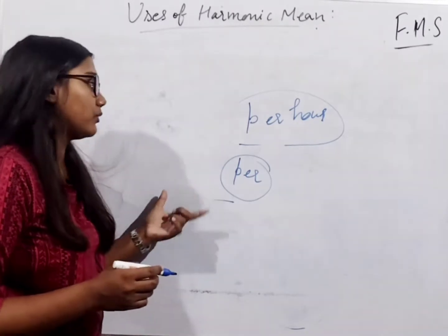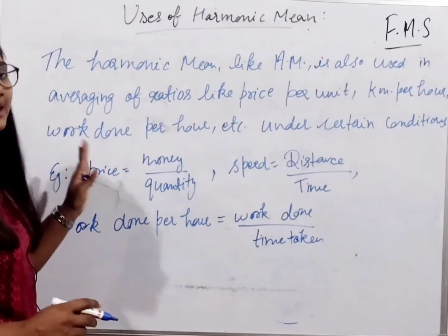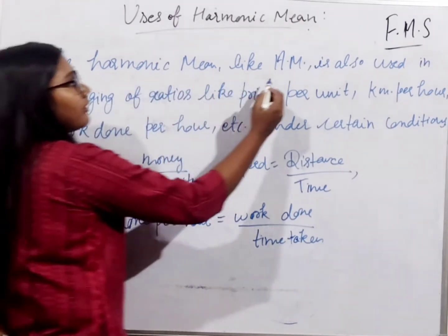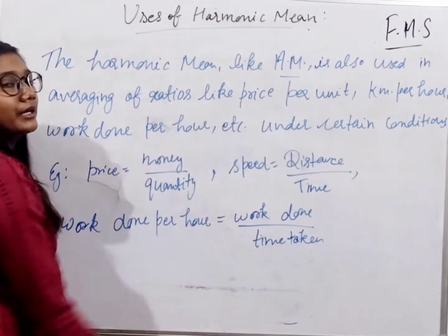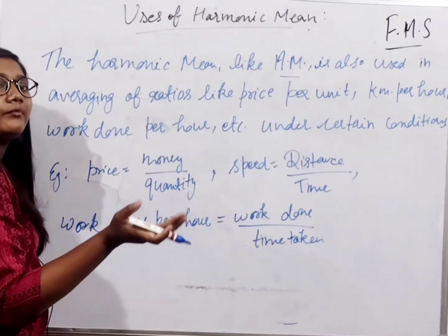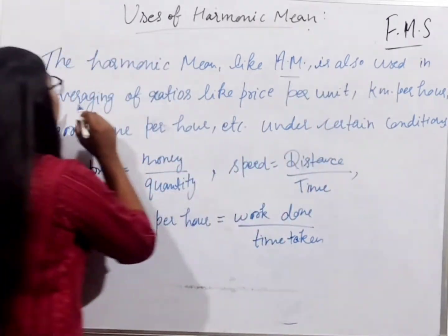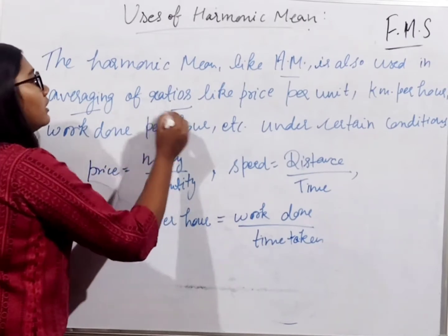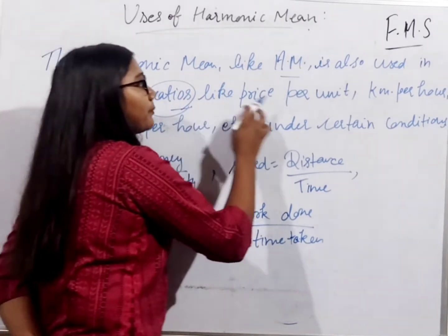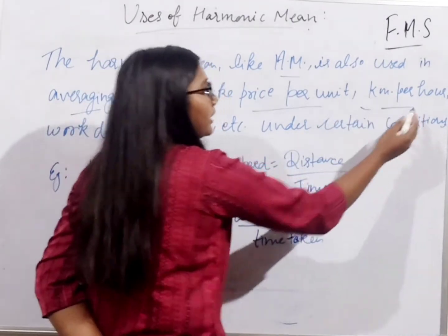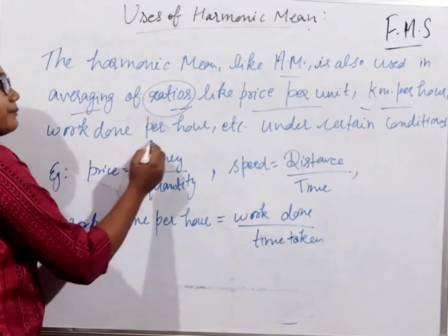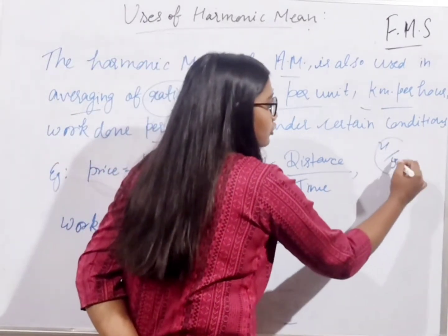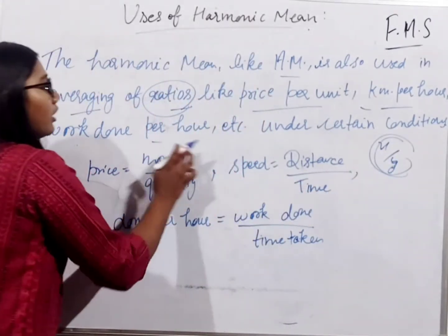Let me write and show how we use it. I have written here in the written exam: the uses of harmonic mean. Like arithmetic mean, harmonic mean is also used in averaging of ratios — for example, where values are given as price per unit, kilometers per hour, or work done per hour. When values are given in some ratio form, harmonic mean is used.